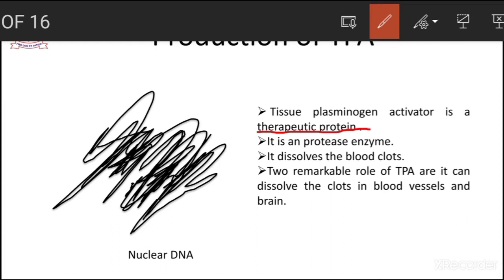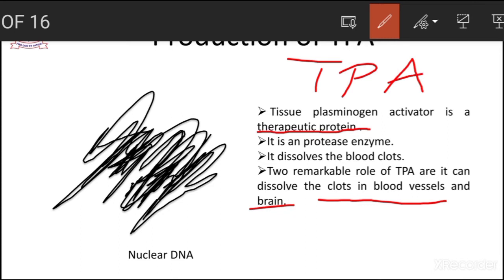A clot is due to the formation of fibrin. Fibrin is an active form which results in the formation of clots in blood vessels and even in the brain. So what does tissue plasminogen activator — in short, TPA — do? It actually dissolves the clot and enables the blood to flow without any restriction. This is the role of tissue plasminogen activator as used in the field of medicine.